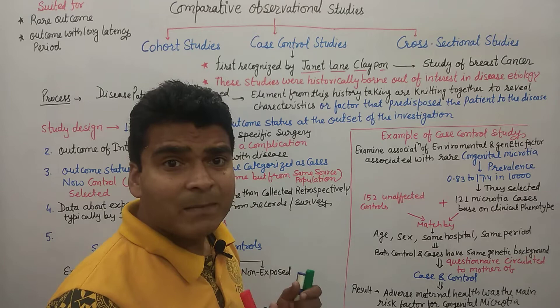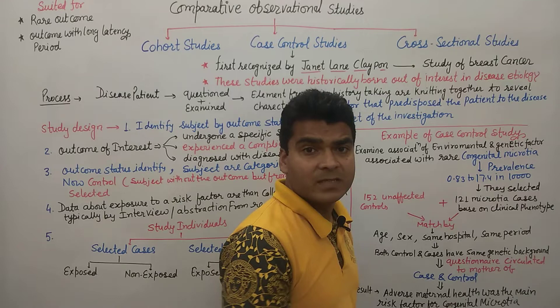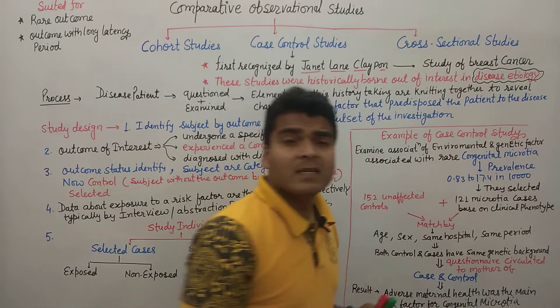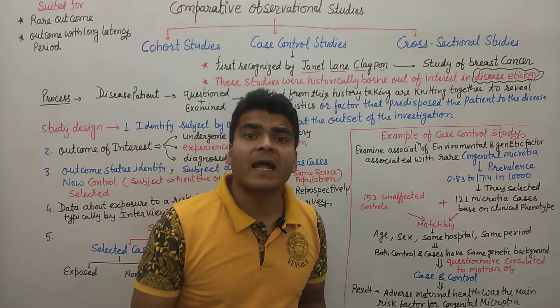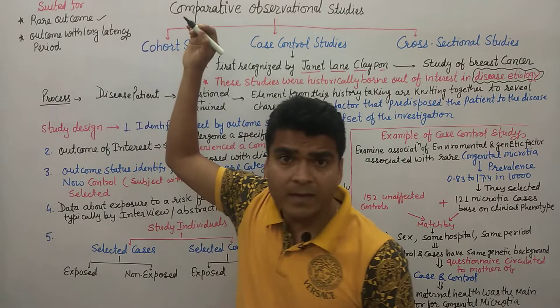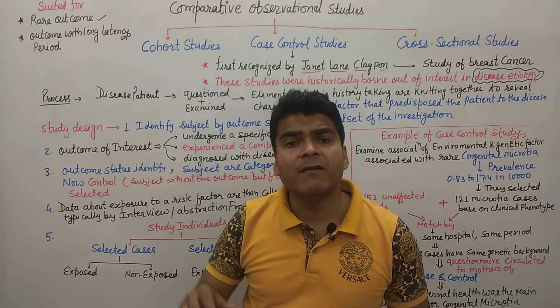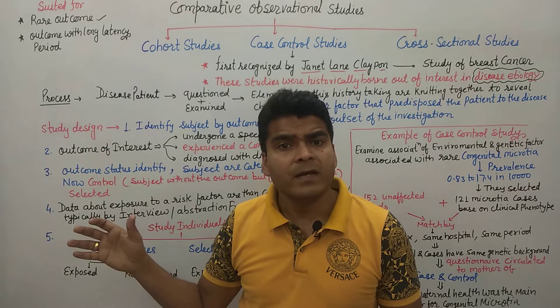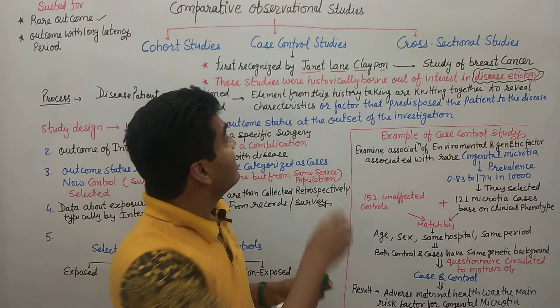Case control studies were historically born out of interest in disease etiology — that is, the cause behind the disease. In case control studies we generally identify the causes behind diseases. They are performed for two reasons: first, rare outcomes; and second, outcomes with a long latency period, such as tuberculosis, which takes a very long time to develop.